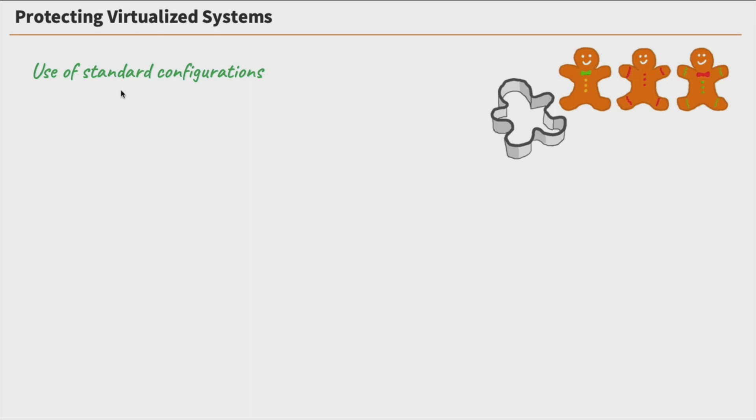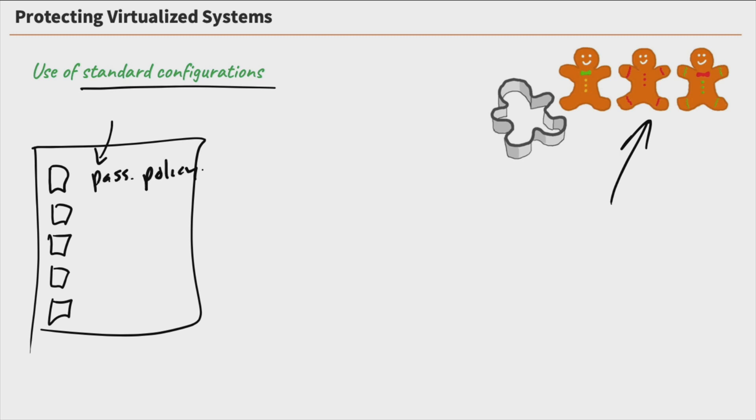Next we're looking at using standard configuration. Here this is a great example using cookie cutter. We define some standard configs, and these standard configs basically have a checklist. This is how we're going to build out our systems. This includes things as simple as how we're going to set up our password policies on our systems so that they are all the same. These are the settings we're going to use in our system, including IP address settings, NTP, that's our network time protocol, so our time is all synced up.